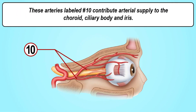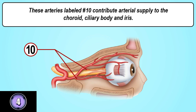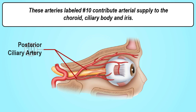These arteries labeled number ten contribute arterial supply to the choroid, ciliary body, and iris. The answer is the posterior ciliary artery.